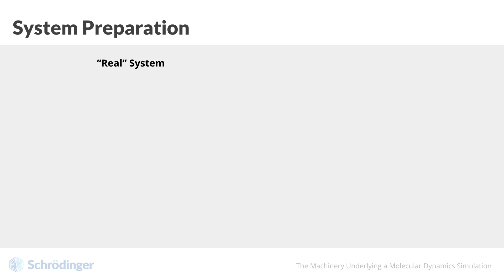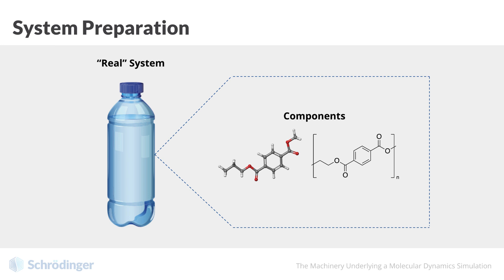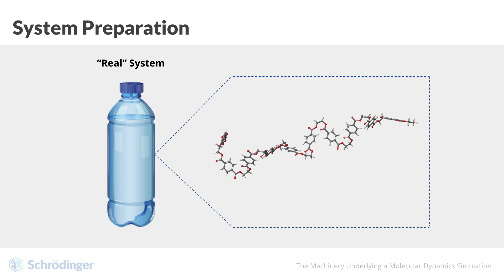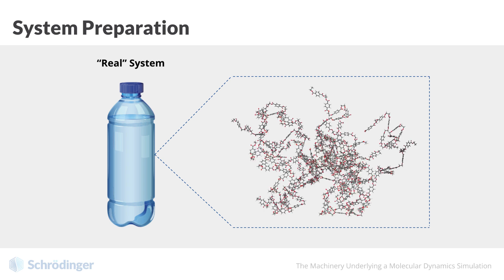If our real system is a bottle composed largely of PET, should we prepare a system of one monomer, one tenmer, or twenty tenmers? Should we have varying chain lengths or uniform lengths? What density should the initial configuration have? We can imagine that our real system may be very complex with multiple components, distributions, or even interfaces.